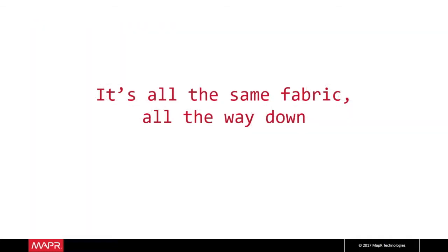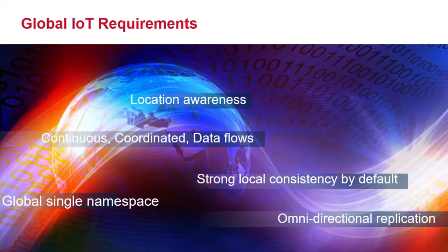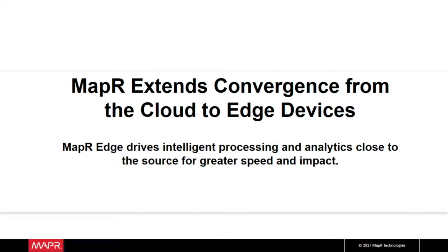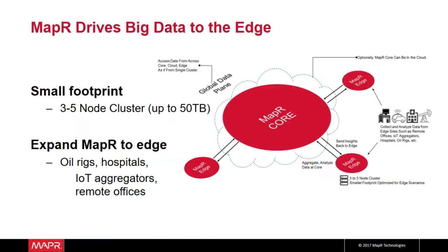It's the same fabric all the way down. It has certain constants, certain requirements — location awareness, strong local consistency, things like that. This week we're announcing convergence of this to the edge: we're announcing MapR Edge. These are small node clusters — very small. There's one on this stage, an entire cluster. It extends things into factories, into oil rigs, into hospitals.